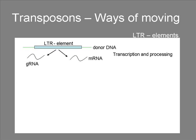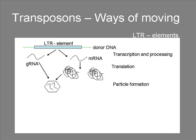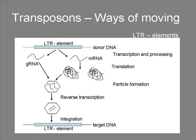This is how LTR retrotransposons manage to transpose themselves. First, the element is transcribed into RNA. The RNA can either be translated into protein or become genomic RNA and be encapsulated by the proteins. A specific packaging signal recognition site on the genomic RNA interacts with the Gag proteins, which assemble to form capsules surrounding the genomic RNA and the enzymes. Then, reverse transcriptase becomes active and copies the RNA into DNA. After reverse transcription, the particle is broken down and the integrase recognizes the two ends with the LTR and inserts them into the host genome.